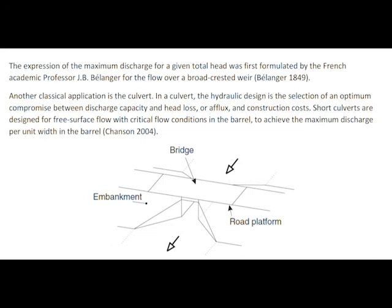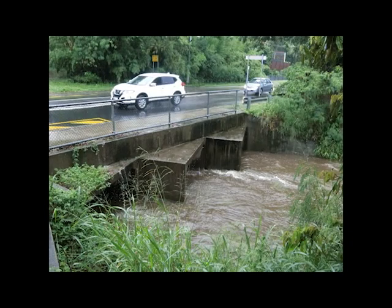Another classical application is a culvert. The hydraulic design is an optimum between discharge capacity, head loss, and construction cost. For short culverts, the flow is typically designed to operate at critical flow condition in the barrel for the design discharge, to maximize the discharge per unit width, to minimize the barrel width, and in turn to minimize the cost.